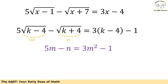We have 5 times radical(x minus 1) minus radical(x plus 7) equals 3x minus 4. Using our substitution with k minus 4 and k plus 4, we get: 5 times radical(k minus 4) minus radical(k plus 4) equals 3 times (k minus 4) minus 1.